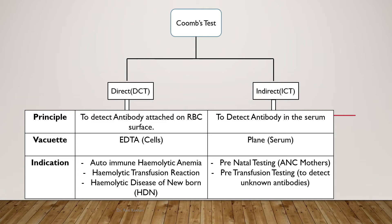Indications for the Direct Coombs Test are autoimmune hemolytic anemia, immune-mediated transfusion reaction, and hemolytic disease of the newborn. Indications for the Indirect Coombs Test are prenatal testing in antenatal care mothers and pre-transfusion testing to detect unknown types of antibodies before blood transfer.